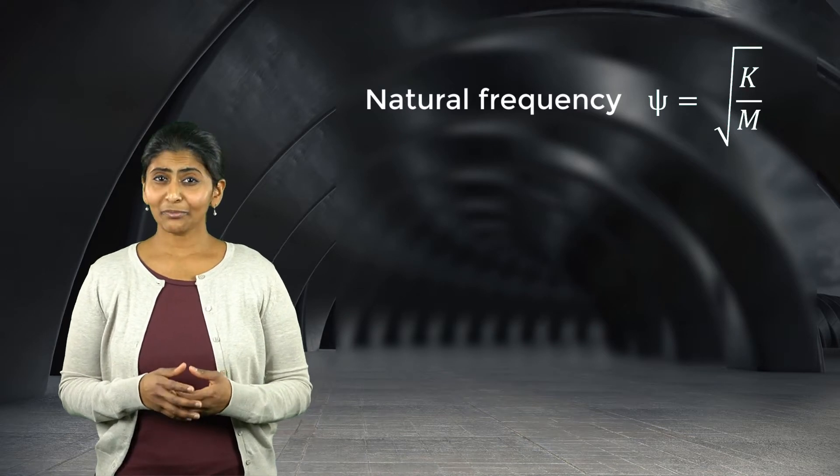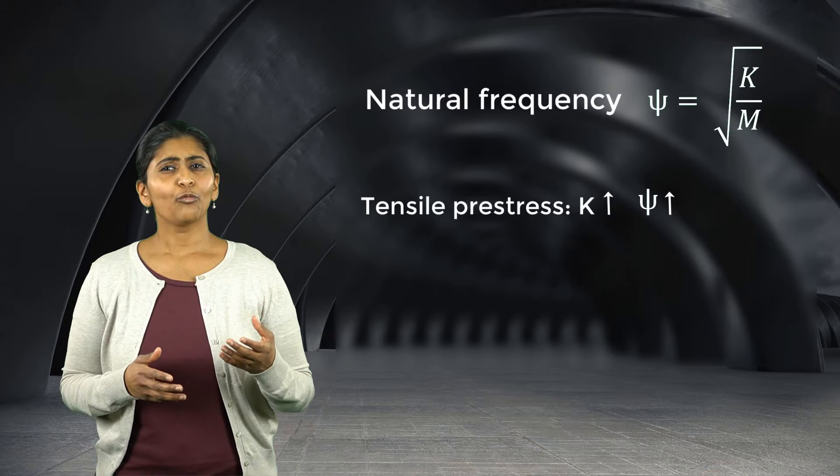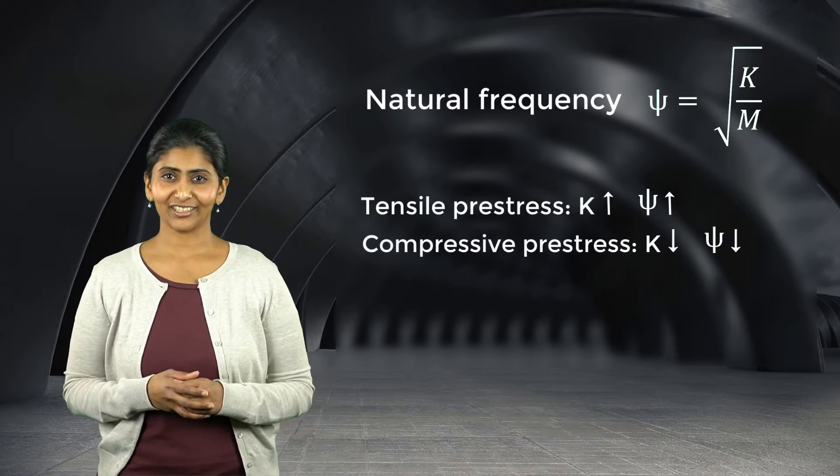A tensile pre-stress generally increases the natural frequency, while a compressive pre-stress reduces the natural frequency. Bolt preload plays a similar role on bolted joints. Applying more or less bolt preload changes the initial stress state of the assembly and this may change its natural frequency.